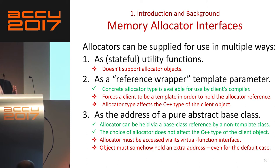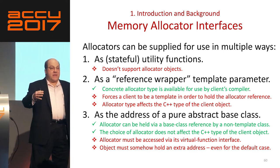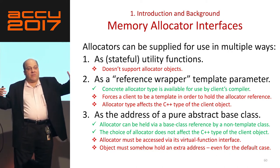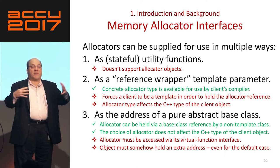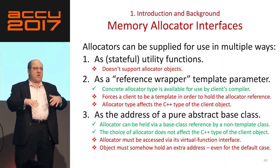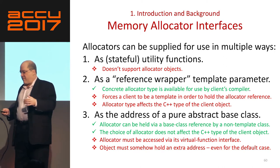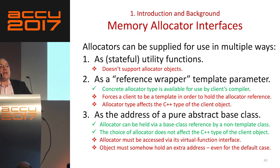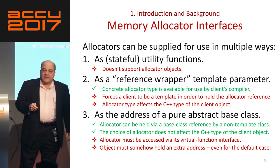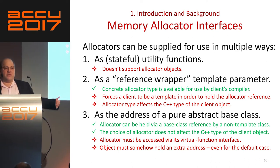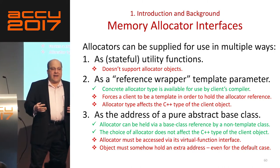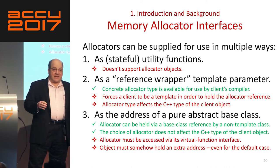What's good about the type-parameter approach is the concrete allocator type is available for use by the client's compiler. The container can be viewed by the client's compiler, and the allocator can be inlined because it's part of the type — everything is known at compile time. So I don't have to worry about nasty overhead like function calls, because as we all know, templates are the fastest thing possible. Unfortunately, there are some problems with making everything a template, like you don't have .o files, and it makes it very hard to interact with other non-template things. If I have something like a file system path name and I want to give it an allocator, I'd have to make it a template — and that's nuts.